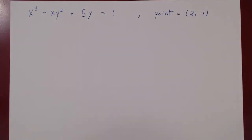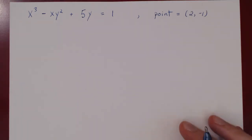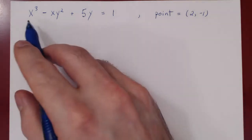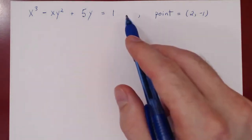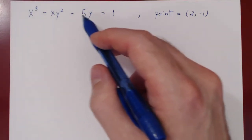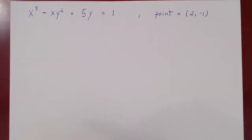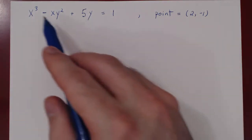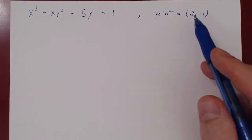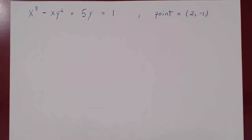In this video, we will consider additional problems of implicit differentiation. Here's the problem: we're given a curve with equation x cubed minus xy squared plus 5y equals 1. We want to find the equation of the tangent line to this curve at the point x equals 2, y equals negative 1.